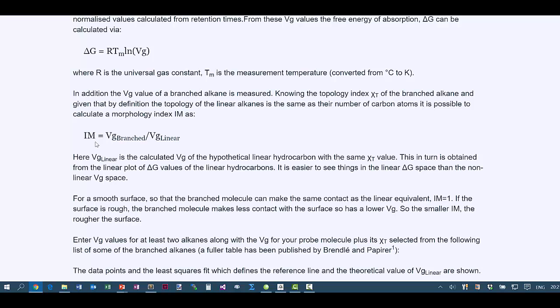If you have a rough surface, a branched alkane is less able to contact the surface, so the effective Vg will be less. The morphology index will be less than one for a rougher surface.